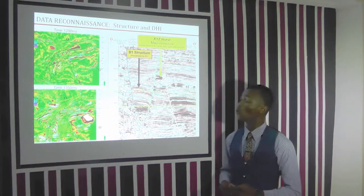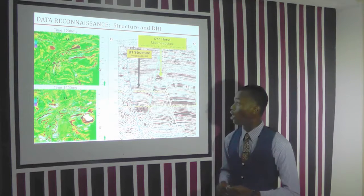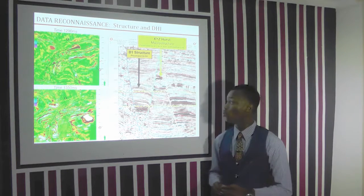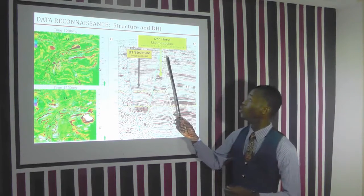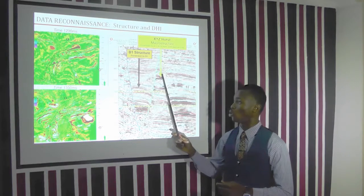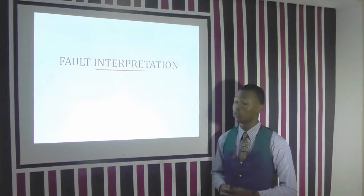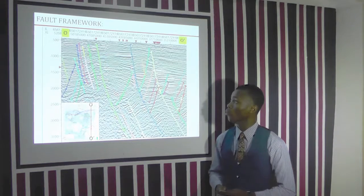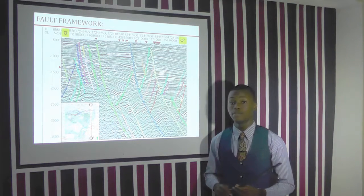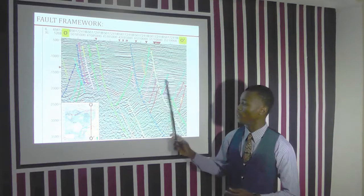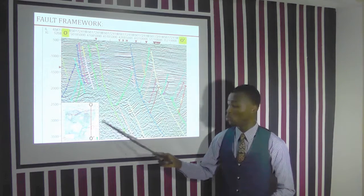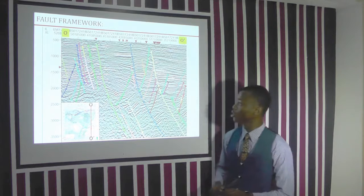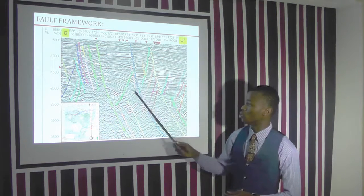This is the data basis for structure interpretation and direct hydrocarbon indicators. After interpreting our seismic, we discovered that well B1 corresponds to a graben structure, and wells A1 down to A8 lie within the main structure of the study area. We carried out fault interpretation on the available seismic data. This image shows a time slice highlighting the area of concentration where most of our wells are located, and showing most of the faults mapped across the field.